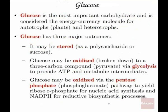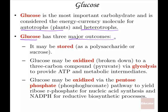Glucose is the most important energy carbohydrate molecule — I call it a currency molecule. It's the molecule exchanged between plants and animals, the molecule that flows in our bloodstream and provides energy to all our cells, and it is also the building block molecule in plants. Glucose has three major outcomes: it can be stored, it can be oxidized or broken down into pyruvate through glycolysis, and ultimately glucose will be turned into ATP and other metabolic intermediates.